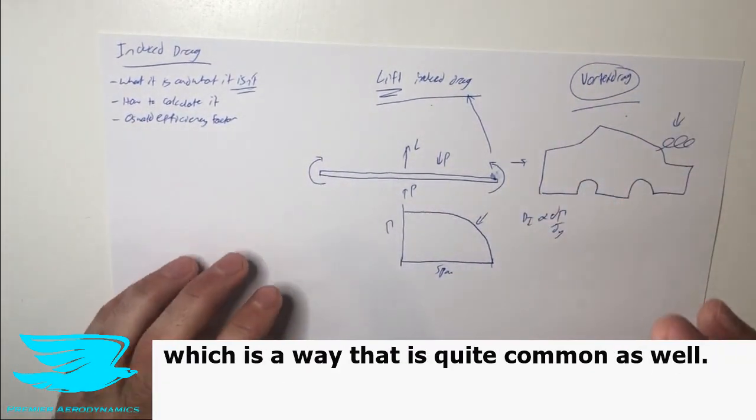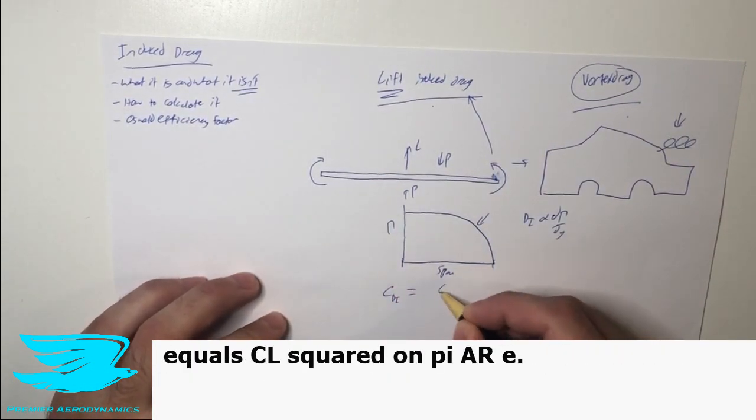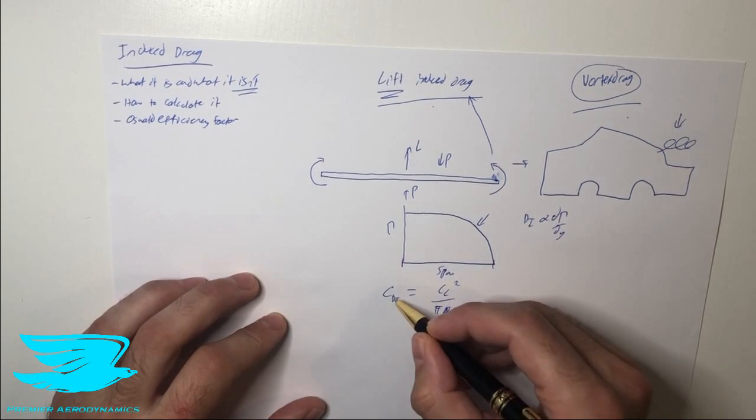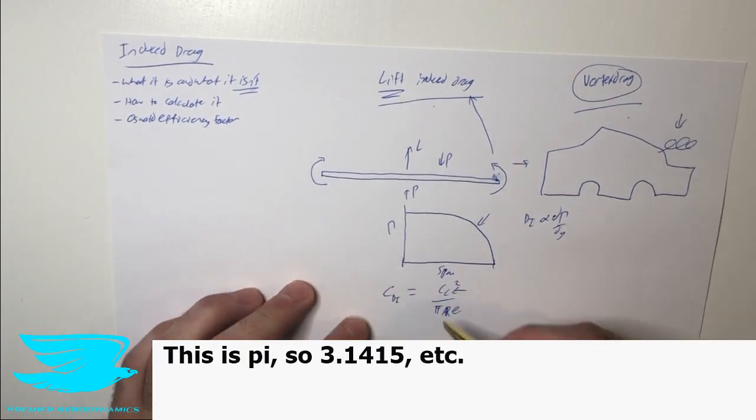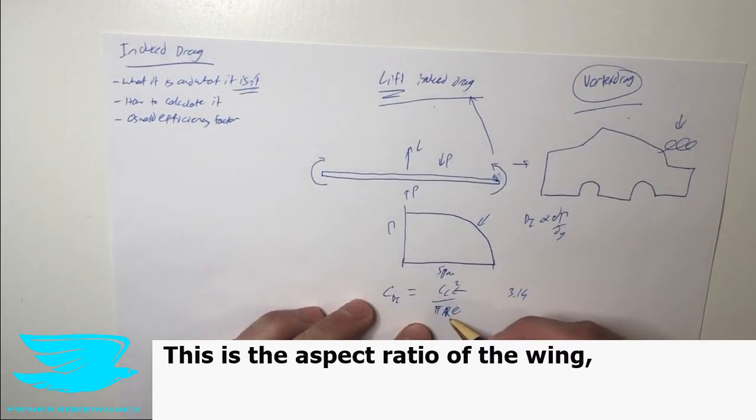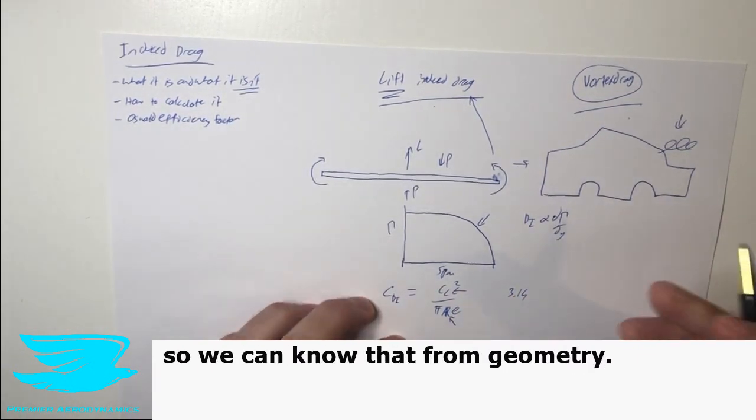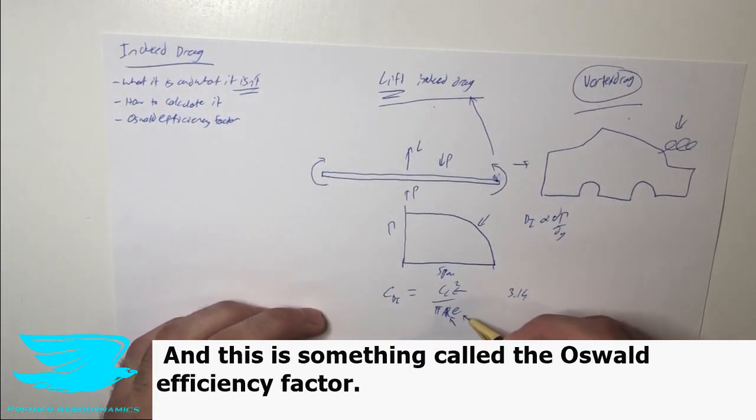We're going to look at a very simple way, which is a way that is quite common as well. And we just have this equation, which is the induced drag coefficient equals CL squared on pi AR E. So what are these terms? Well, this is the induced drag coefficient. This is the lift coefficient. This is pi, so 3.1415, et cetera. This is the aspect ratio of the wing, so we can know that from geometry. And this is something called the Oswald efficiency factor.